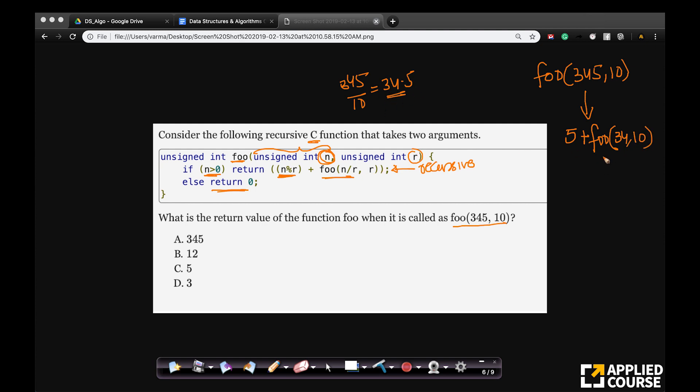So this will call this. Now, again the same thing will happen. Your foo 34 comma 10, n percentile r. So 34 when you divide by 10, your reminder is 4.